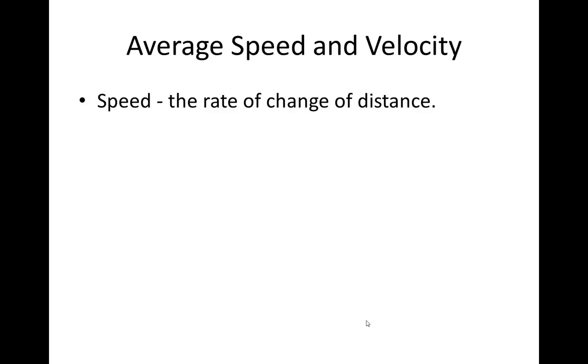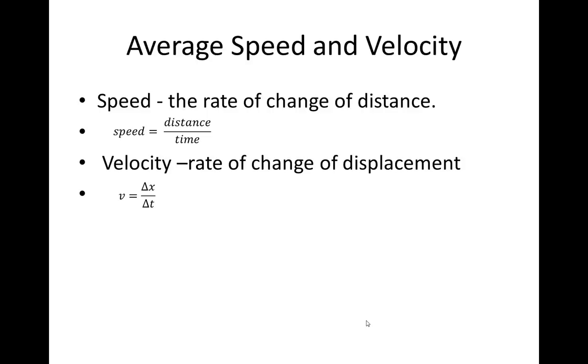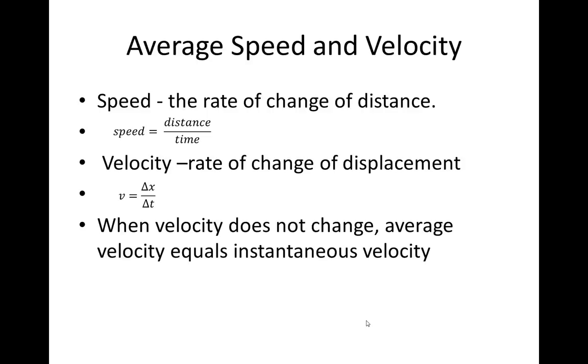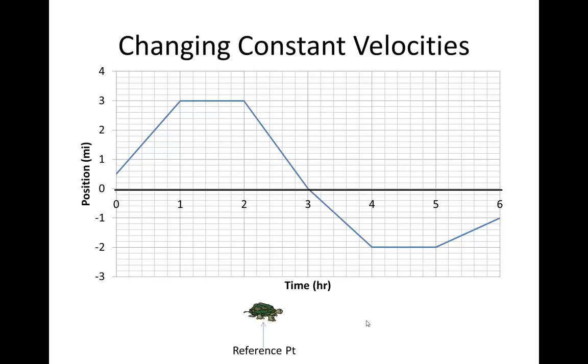Now average speed and average velocity. Speed is the rate at which distance changes, so speed is distance divided by time. Velocity is delta X over delta T, which we just talked about. When velocity doesn't change, average velocity equals instantaneous velocity.